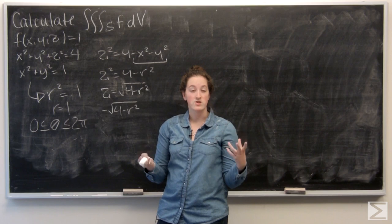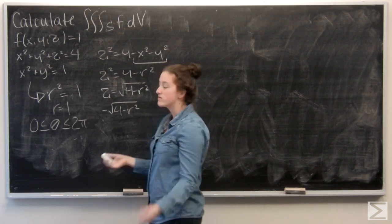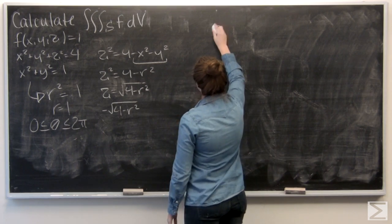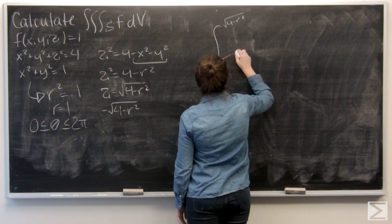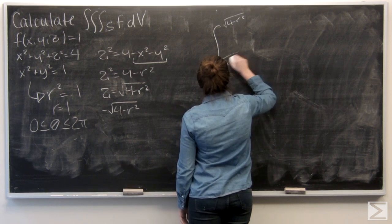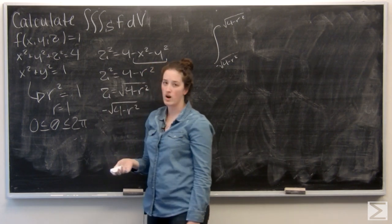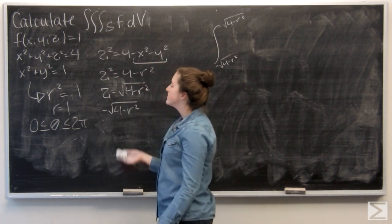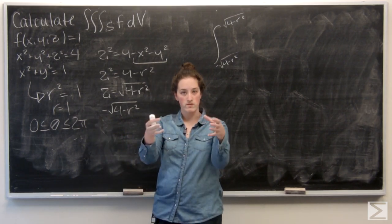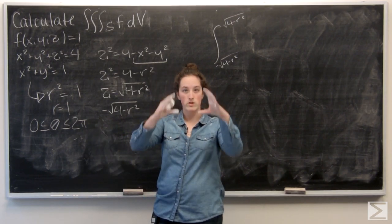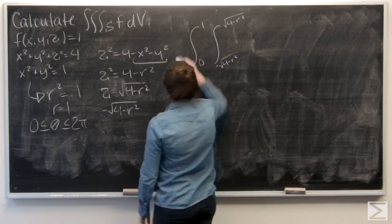The boundary conditions for z are the most involved, so I'm going to go ahead and do those first. And since the boundary conditions for z are a function of r, I'm going to go ahead and do r next. So when r equals 1, we can really think about it being from 0 to 1, because the circle goes all the way out. And then theta last.